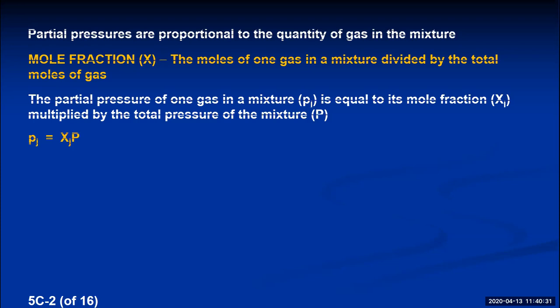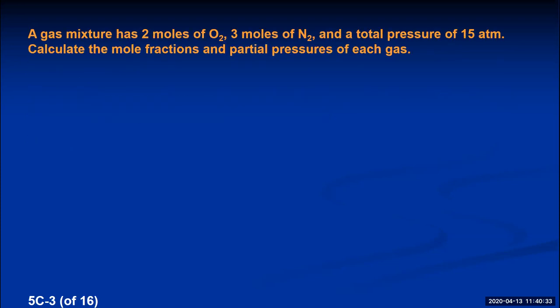Let's look at an example. A gas mixture has 2 moles of O2, 3 moles of N2, and a total pressure of 15 atmospheres. To calculate the mole fraction of oxygen, we take 2 moles divided by the total of 5 moles, giving a mole fraction of 0.4 — meaning the mixture is 40% oxygen on a mole basis.